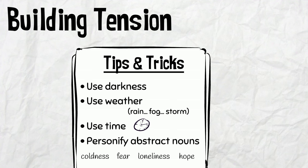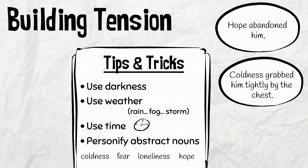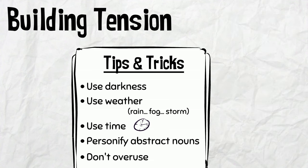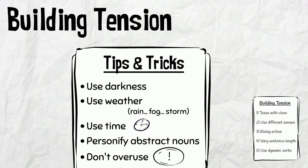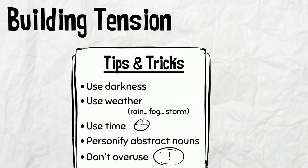For example: "Hope abandoned him. Coldness grabbed him tightly by the chest. Fear dragged its sharp nails down her spine." Don't overuse exclamation marks — the techniques we've explored in this lesson will make your writing more exciting, not exclamation marks. Use them sparingly and in dialogue rather than the narration itself.